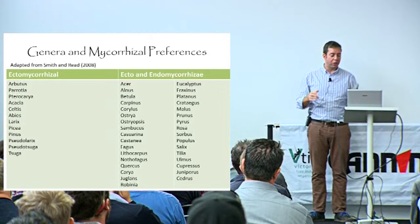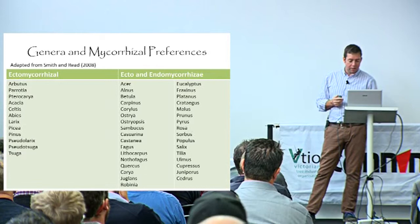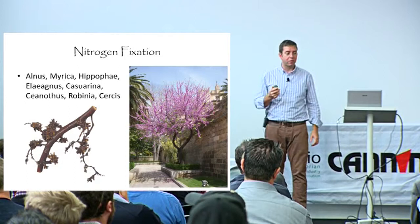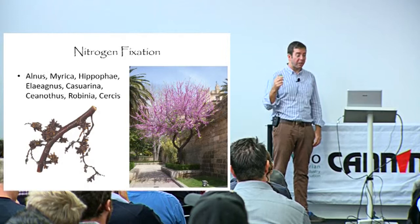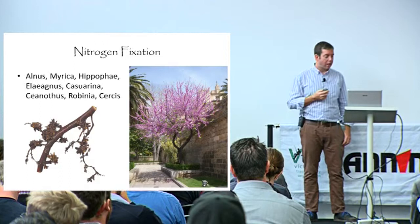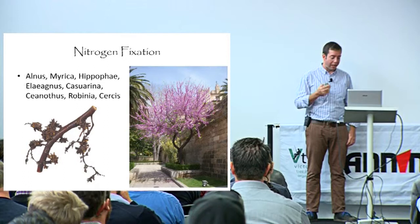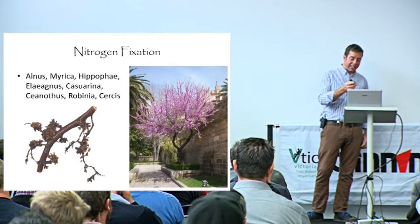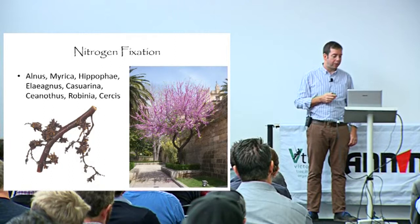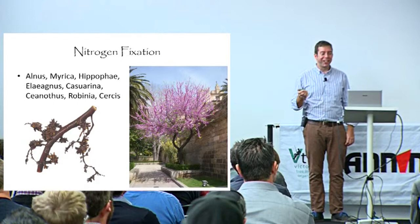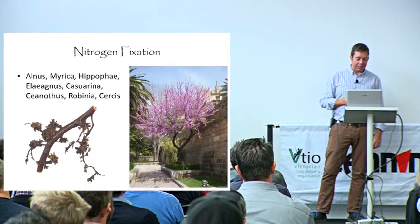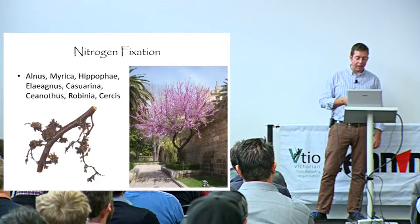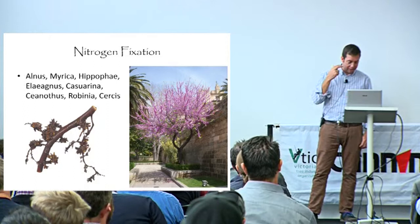We really need to encourage these mycorrhizal relationships as much as possible. Also particularly important in some trees is nitrogen fixation - their ability to fix nitrogen from the atmosphere through symbiotic relationships with fungi or bacteria gives them a massive benefit in terms of fertility in quite poor soil. These species are often associated with fairly early successional status or poor soils - Casuarina, for example, grows on really sandy sites. Alnus is a temperate genus well known for having nitrogen-fixing bacteria. Other examples include Robinia and Cercis.